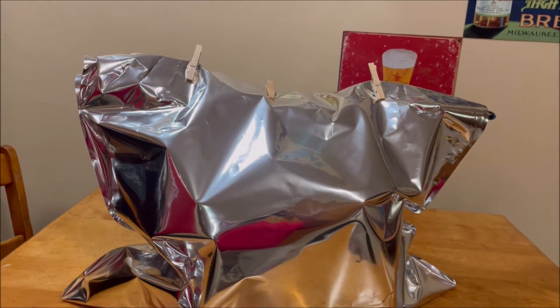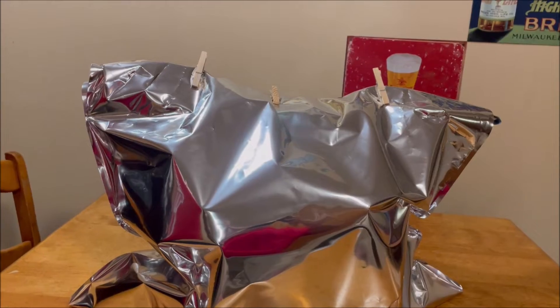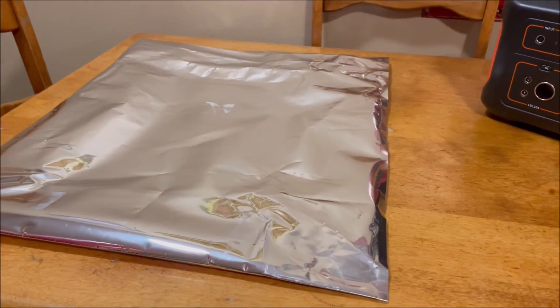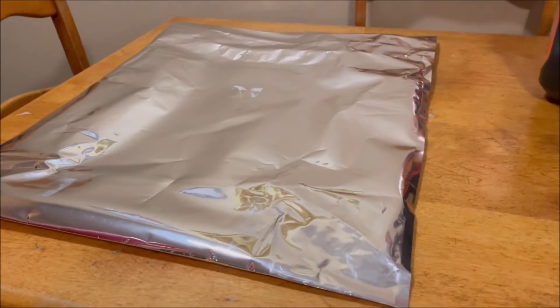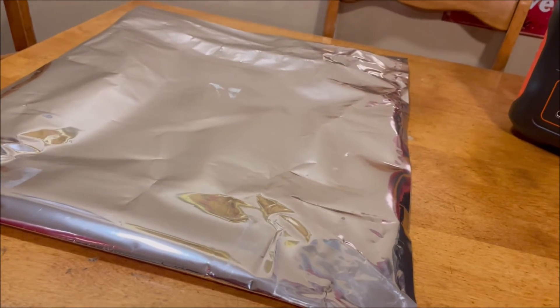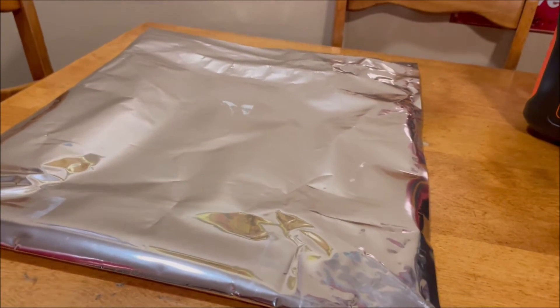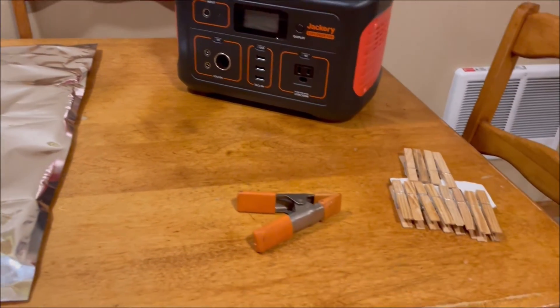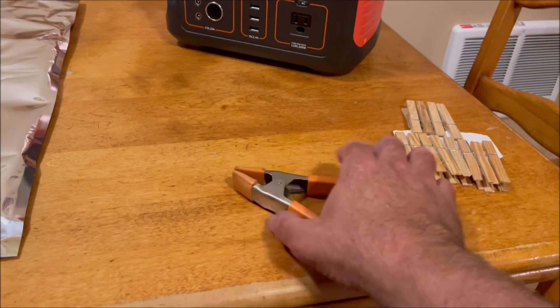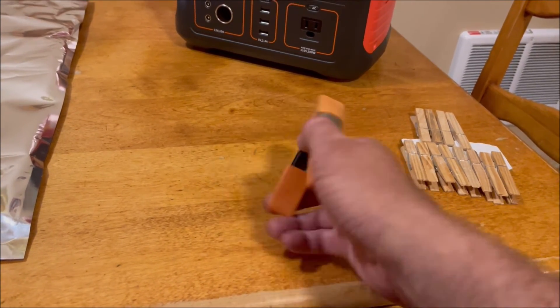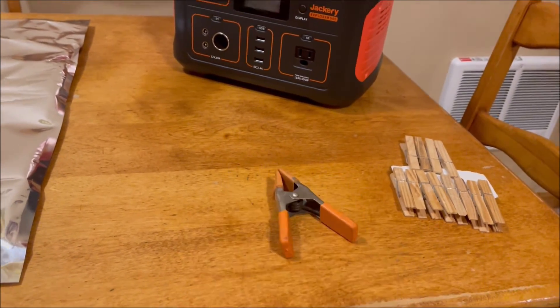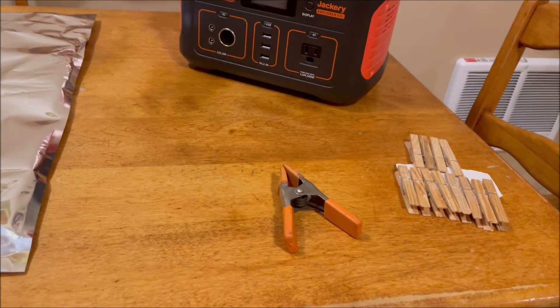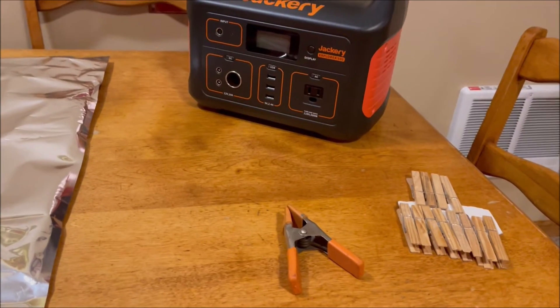Now let's take a look at the Jackery 500. Next we got the Jackery 500 and we have an 18 by 24 bag. This is the next size down from that 26 by 30 that we used for the bigger stations. I've also got out a wood clamp for woodworking. You can use just about anything to keep this bag closed. Let's get it in there.